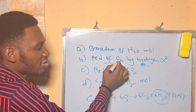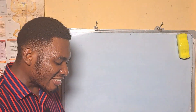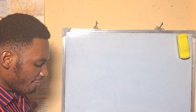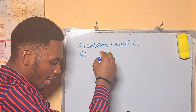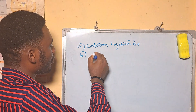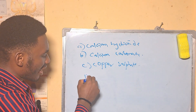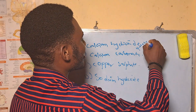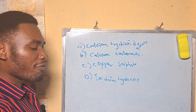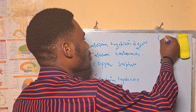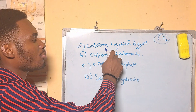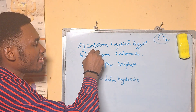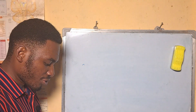The gas produced during respiration can be identified using — A: calcium hydroxide, B: calcium carbonate, C: copper sulfate, D: sodium hydroxide. The answer is A, calcium hydroxide, also known as lime water. CO2, the product of respiration, combines with calcium hydroxide to make it turn milky.